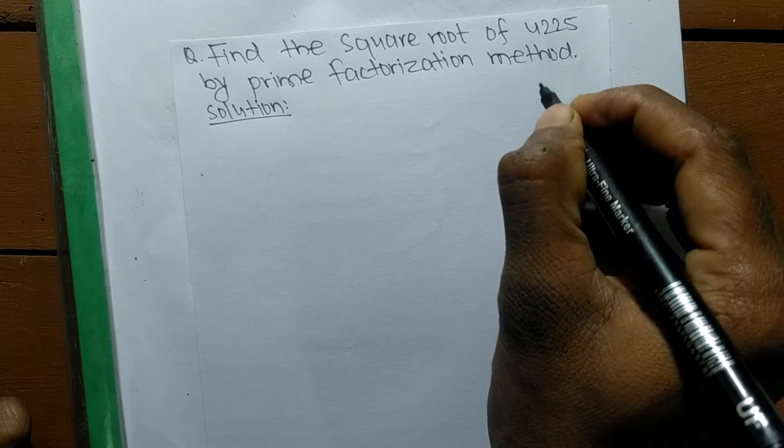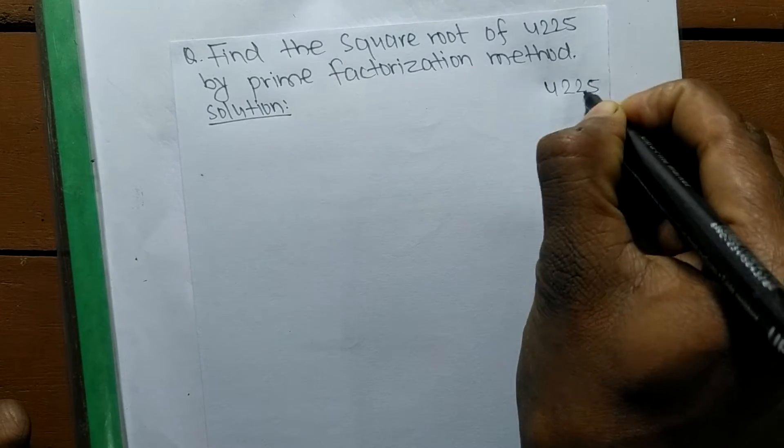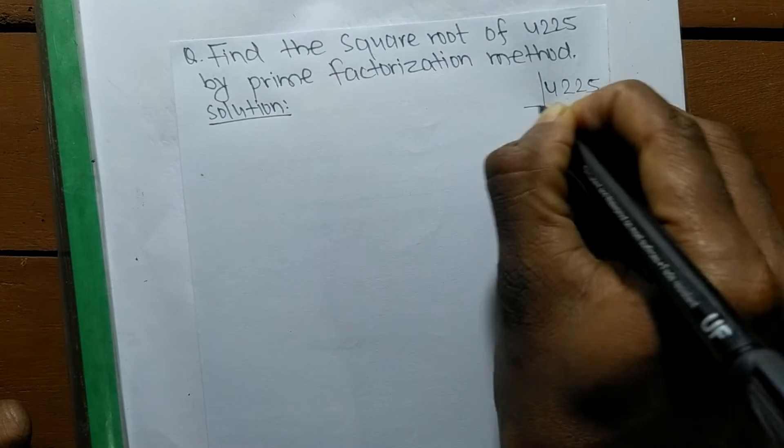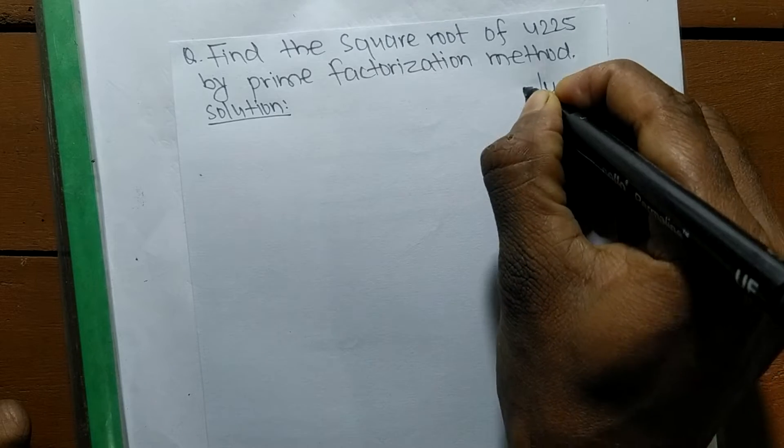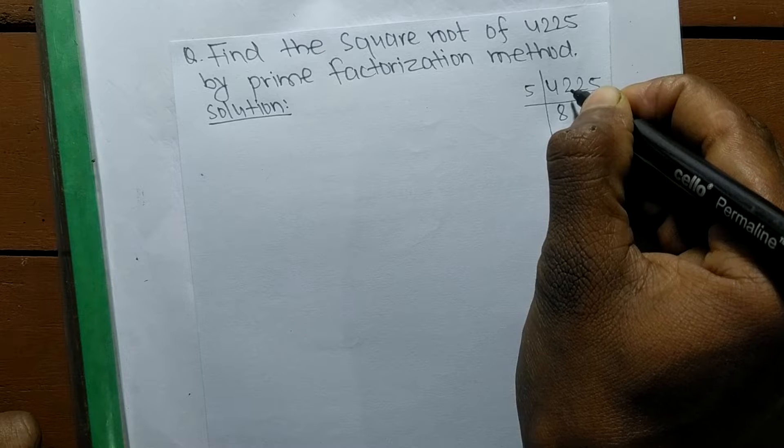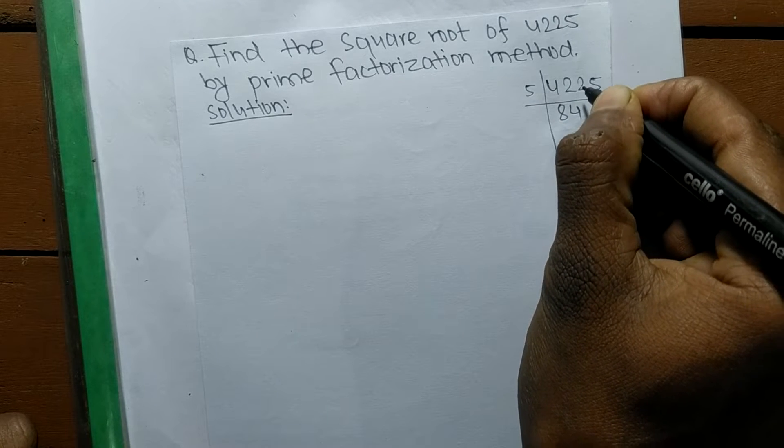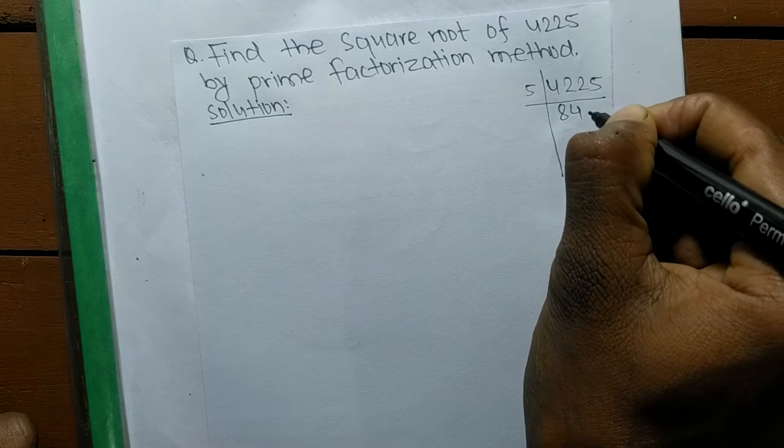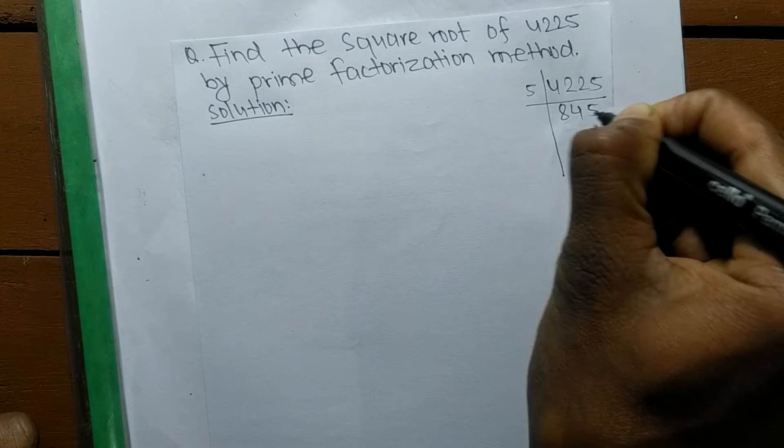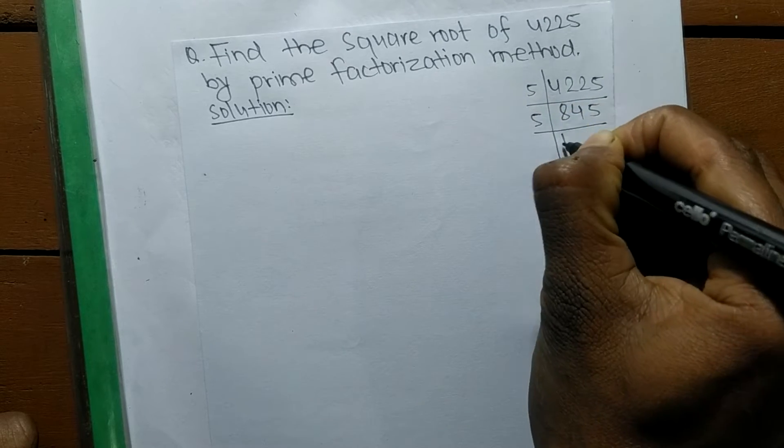We have the given number 4,225. It is divided by 5. 5 times 8 is 40, remaining is 22. 5 times 4 is 20, remaining is 2 and 25. 5 times 5 is 25. Again it is 5 times 1 which is 5, remaining is 3.